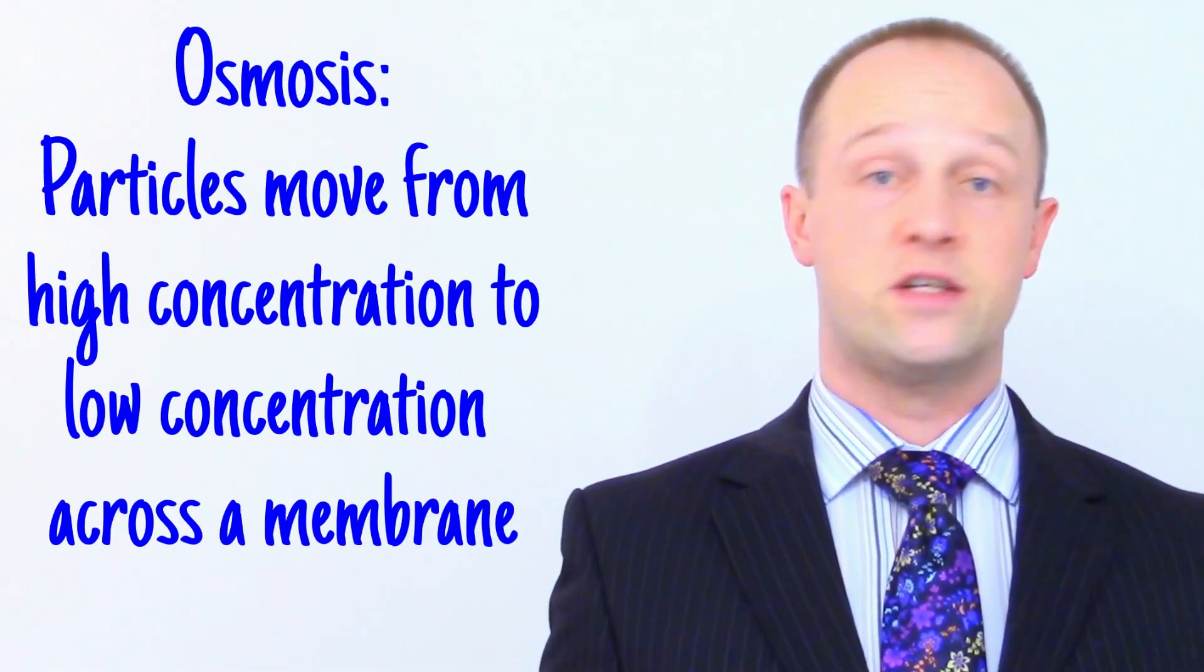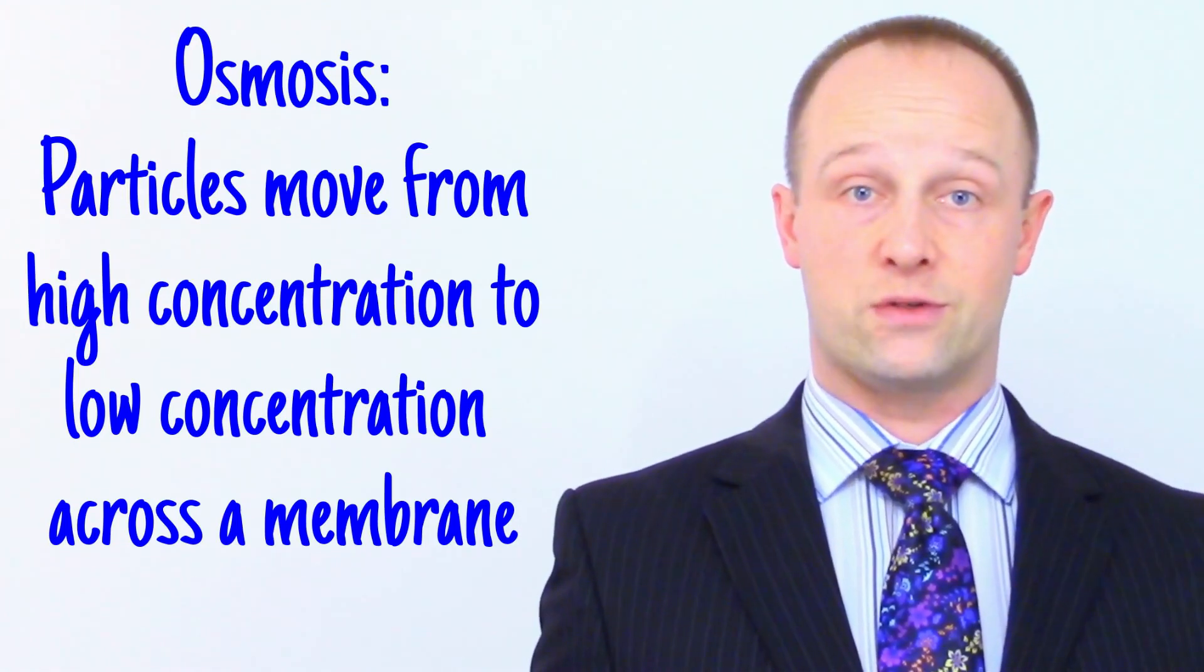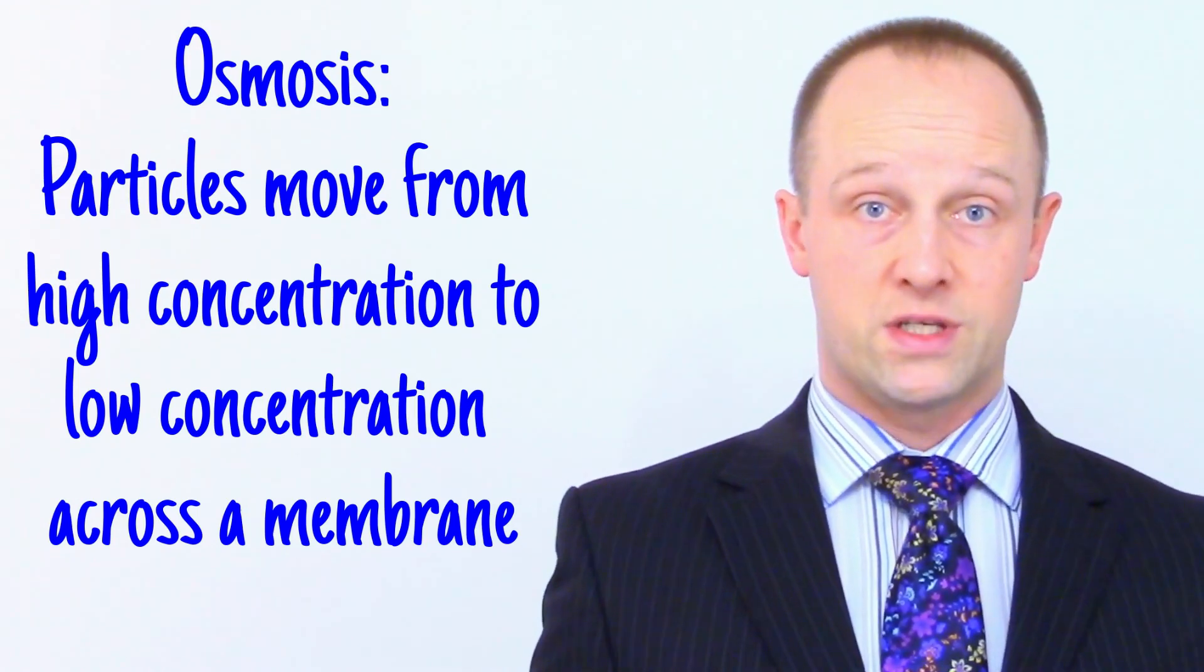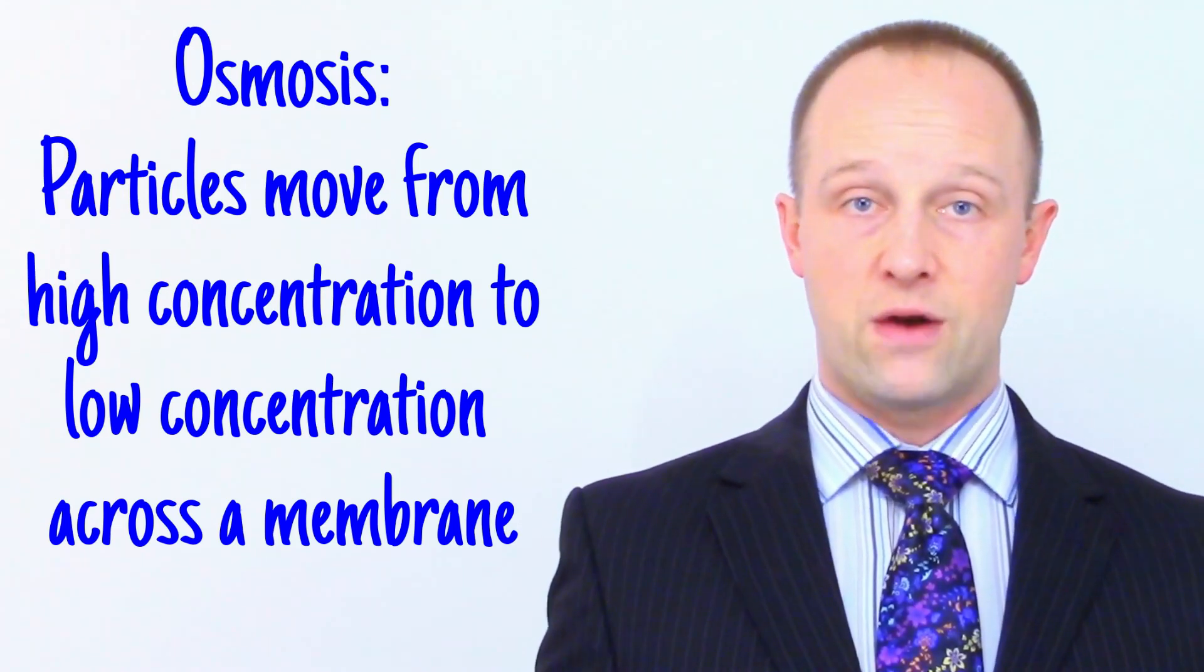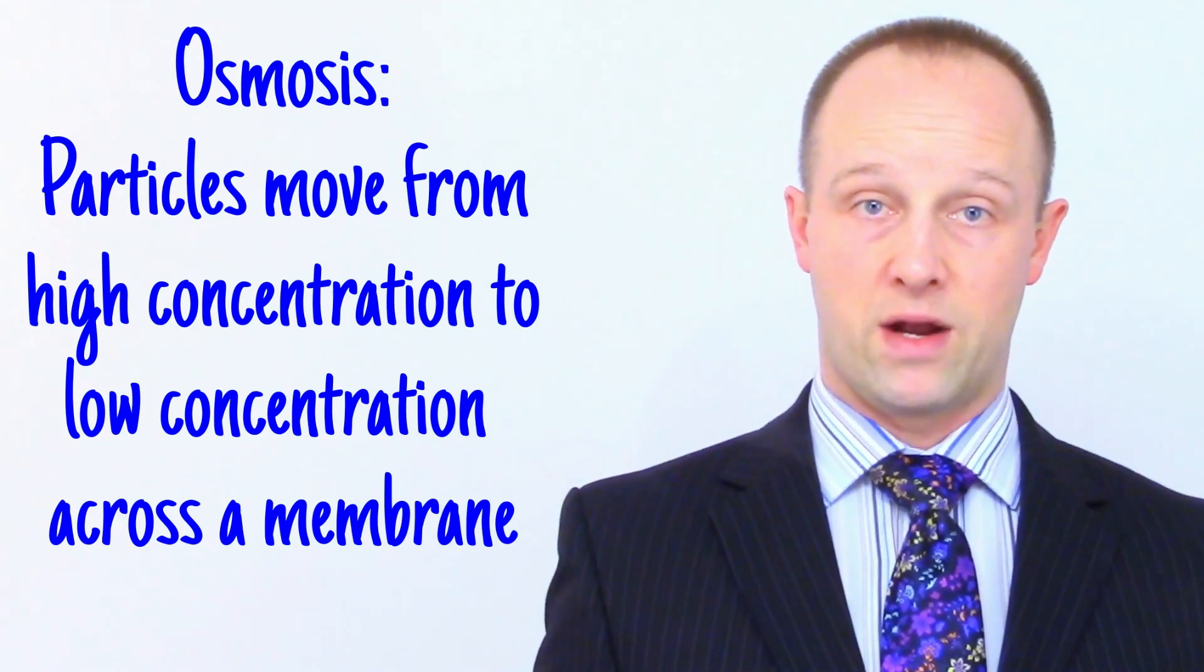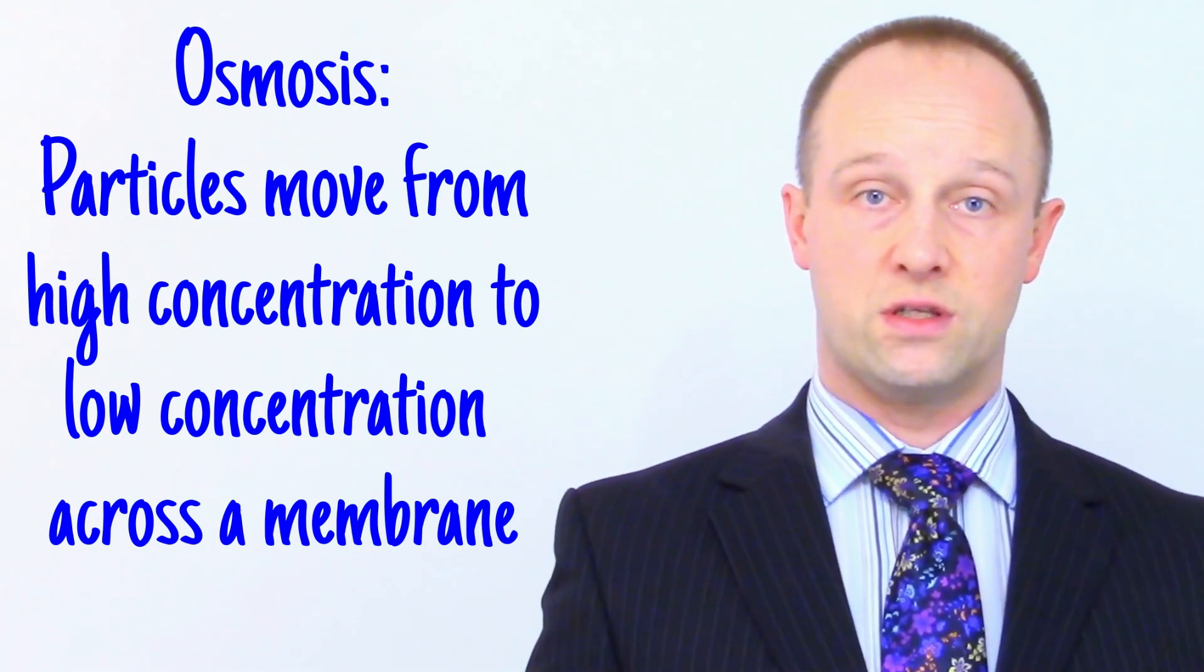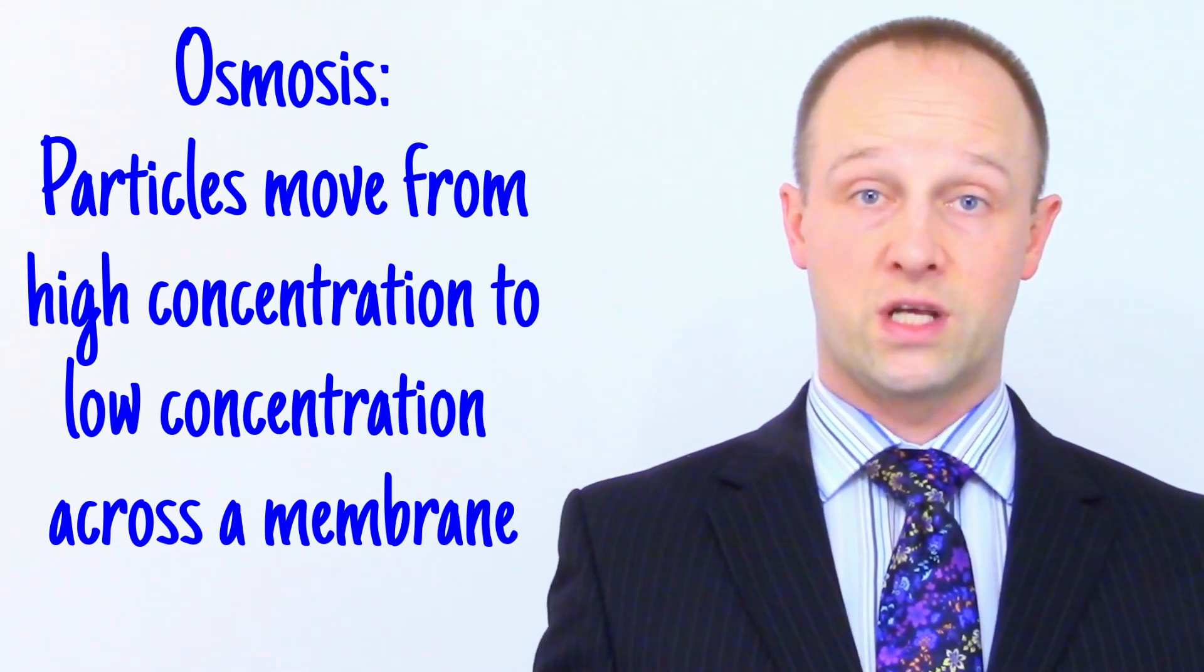The second way substances move around is osmosis, which I'll cover in a future lesson and I'll put a card you can click on just here when it's available to watch. Again, the short version of osmosis is substances moving from high concentration to low concentration, just like with diffusion, until the concentrations even out. The only difference is that osmosis happens across a semi-permeable membrane, such as a cell membrane, which allows only very small molecules through.